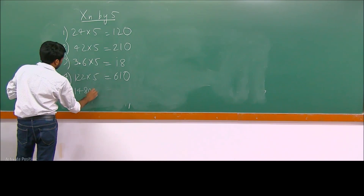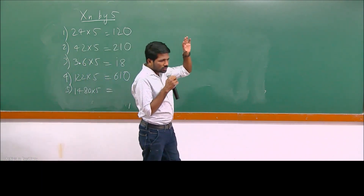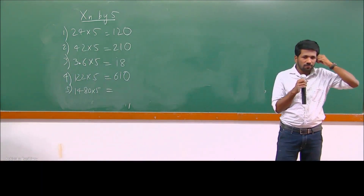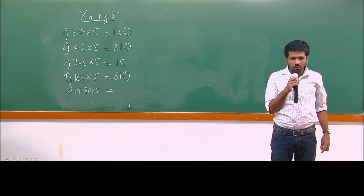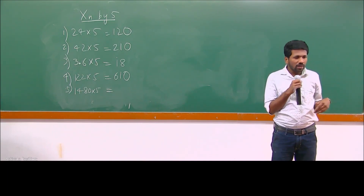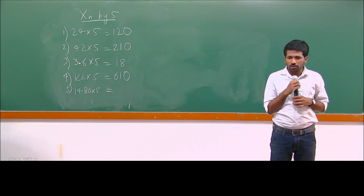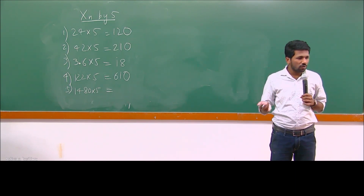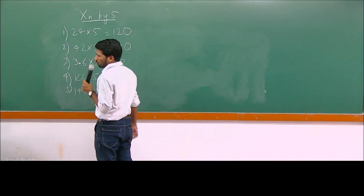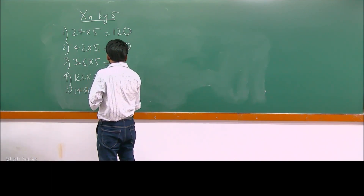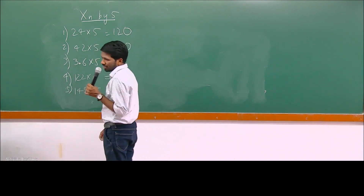If it is 1480 into 5: take half — don't say dividing by 2, say taking half. Half of 1480 is 740. Then attaching a 0 at the end gives 7400. So 1480 into 5 is 7400.